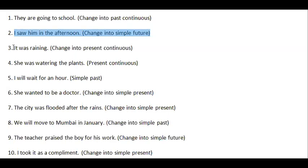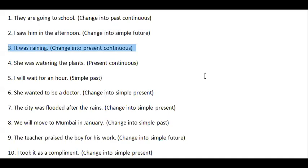Question 3 is: 'It was raining.' Change into present continuous. Remember, continuous means ing form — dancing, playing, singing, going, coming. All these are continuous tense. Ing form means continuous.